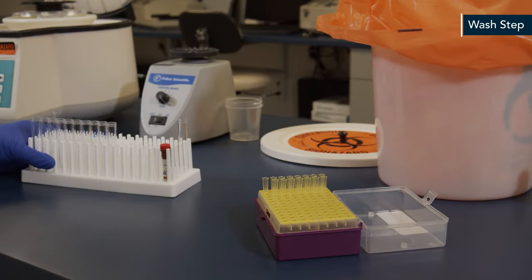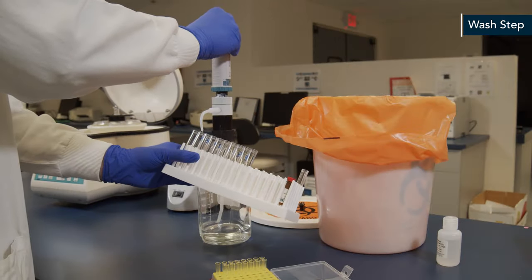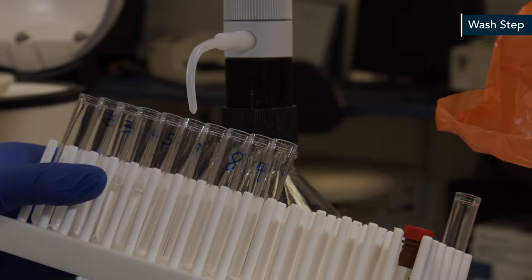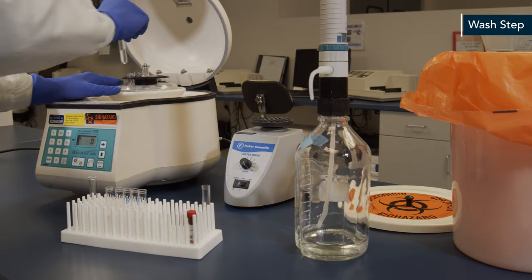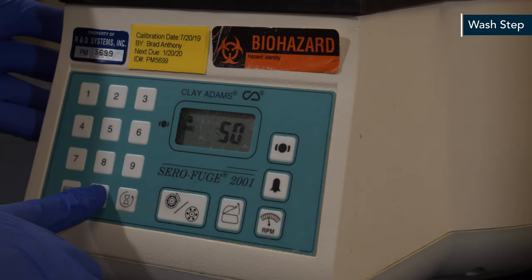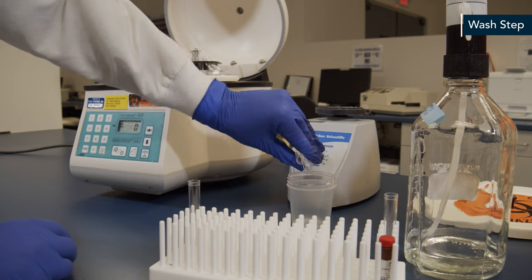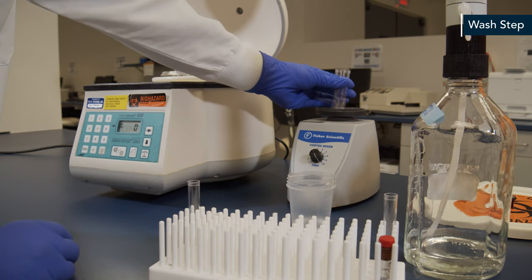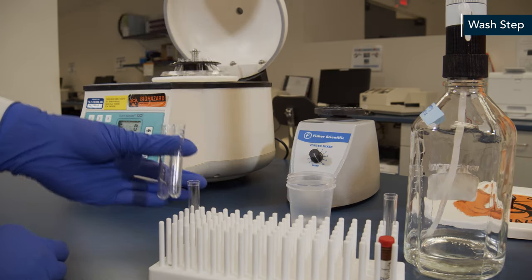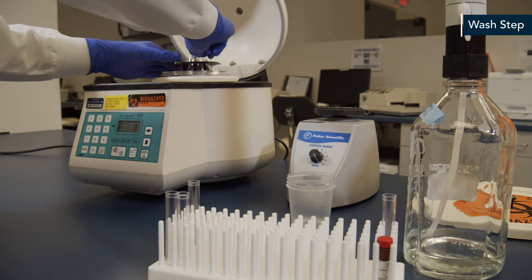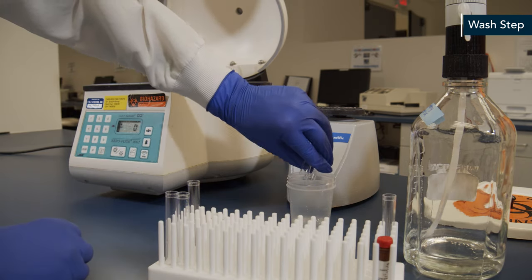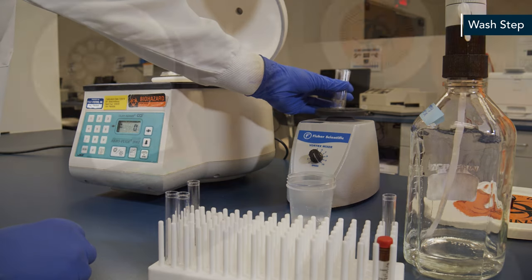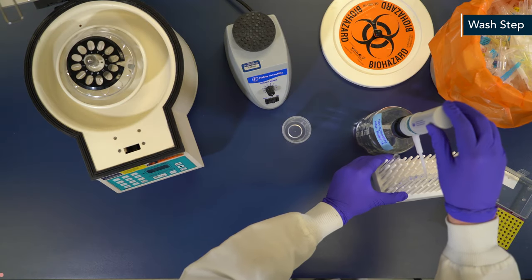Remove any unbound antibody by washing the cells in 2 milliliters of flow cytometry staining buffer. Next, centrifuge the cells. If staining whole blood, use a pipette to remove the wash buffer following centrifugation rather than decanting. Next, resuspend the cells by vortexing. Then add 2 milliliters of flow cytometry staining buffer and repeat the centrifugation.